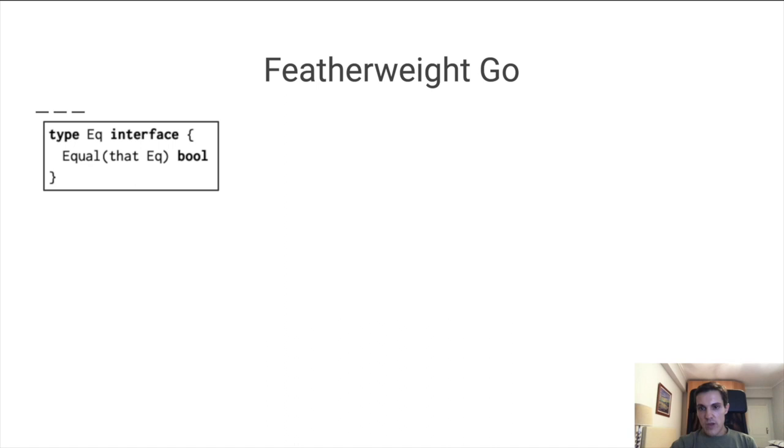Let's see what the language actually looks like. This is an interface for equality, which we named EQ. It has just one method, equal, which takes an argument of type EQ and returns a Boolean.